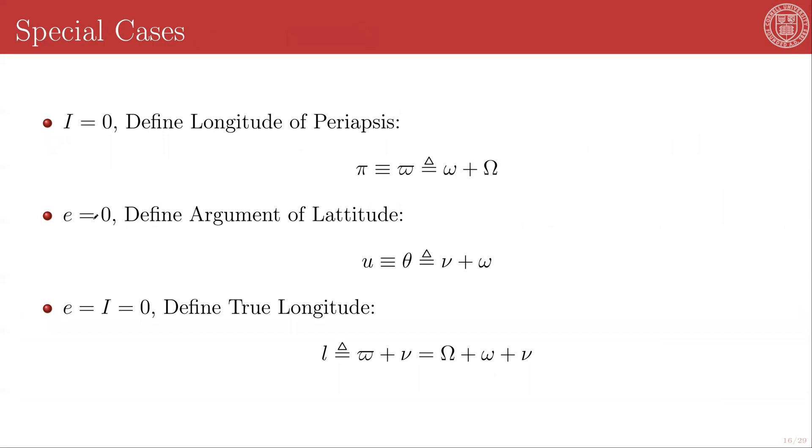In instances where the eccentricity is zero, the periapsis direction is not well defined. And that means that there's no clear distinction between lowercase omega and nu, which are always measured in that same parafocal plane. And so here it is useful to define an argument of latitude, which is given by u or theta. You can always define the argument of latitude as a regular angle, and we will be using this quite frequently even in cases where the eccentricity is non-zero.